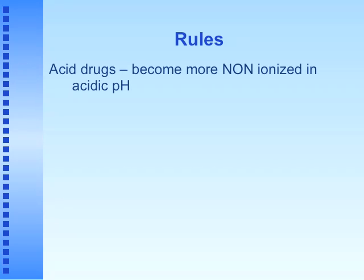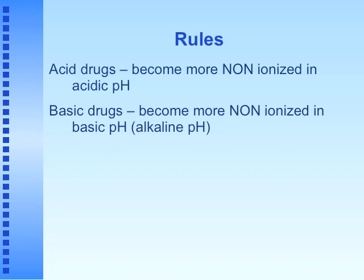Some important rules: acidic drugs become more non-ionized at acidic pH, and basic drugs become more non-ionized at basic (alkaline) pH. Think about where we're putting these drugs — your stomach is a very acidic environment, while other places in the body have a much higher pH. So an acidic drug in an acidic environment like the stomach will be non-ionized and lipophilic; in a basic environment like the intestines, it'll be ionized and hydrophilic. Conversely, a basic drug in an acidic environment ionizes and is hydrophilic; in a basic environment it does not ionize and is lipid soluble.